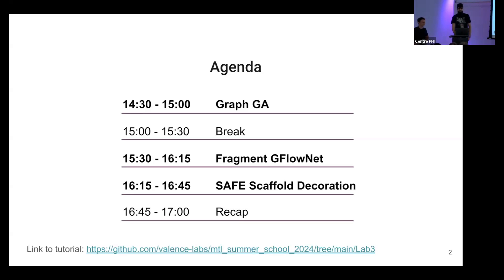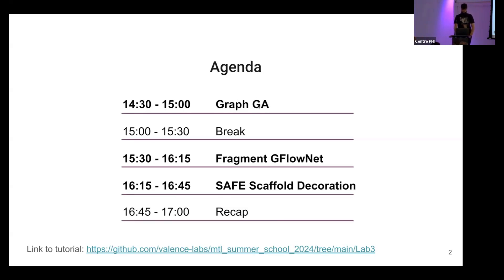You've heard about molecular generation today, and now we're going to make you practice it a bit. There are a lot of techniques you've heard about, like diffusion; this morning you heard about VAEs and all that. We won't have time to cover everything today. In the lab, we'll cover three techniques: one is the more traditional approach around genetic algorithms, the second is a newer approach called GFlowNets that you've probably heard Joshua talk about, and the last one is based on language models — specifically SMILES generation.